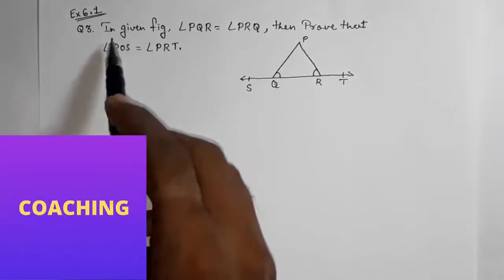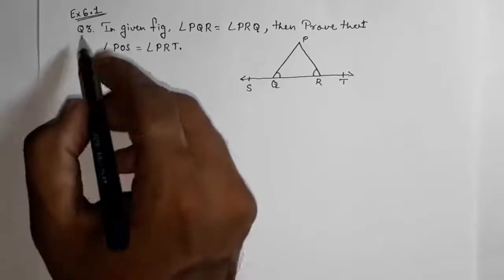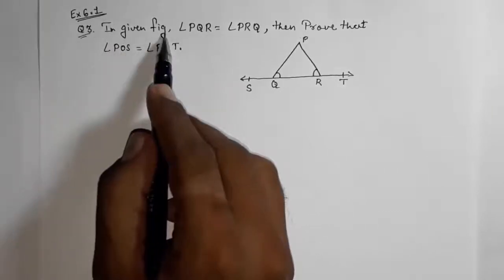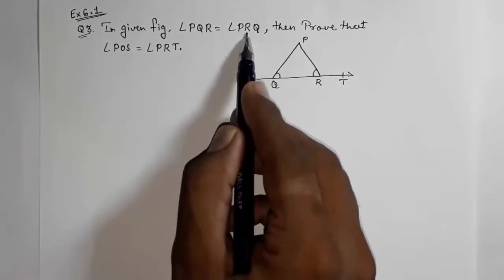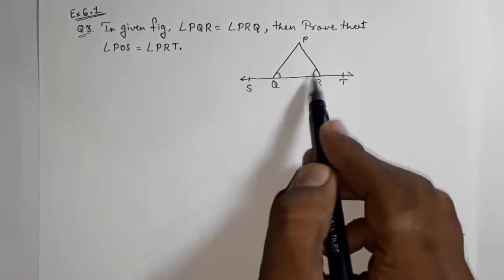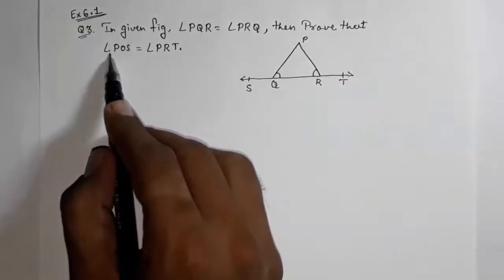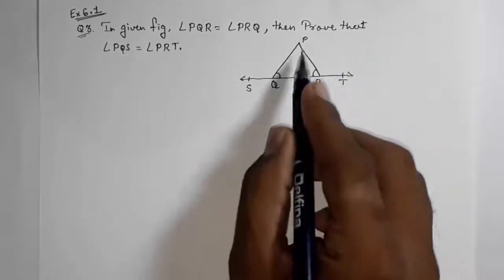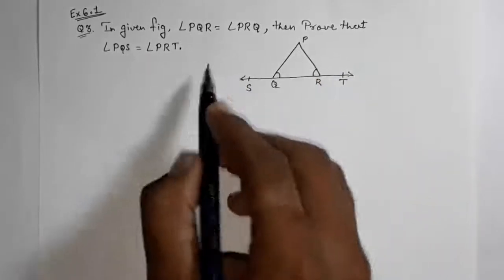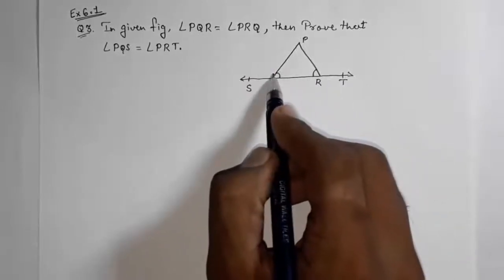Hello friends, today we are going to solve CBSE Class 9 Exercise 6.1, Question 3. In the given figure, angle PQR is equal to angle PRQ. These two angles are equal. Then prove that angle PQS is equal to angle PRT. They said the interior angles are equal given, and we have to prove that the exterior angles are equal.